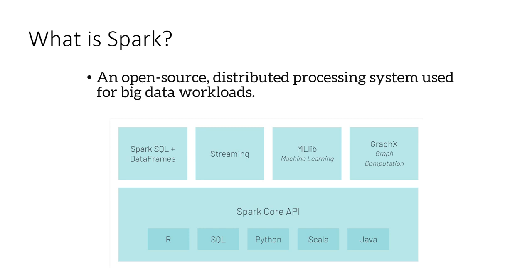So first of all, what is Spark? Spark is an open source distributed processing system used for Big Data workloads. When we came into the Big Data world a couple of years back, the systems were distributed. Traditional technologies would not work efficiently, so new technologies came in like Hadoop, MapReduce, Hive, Impala, and lots of others.